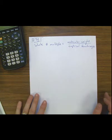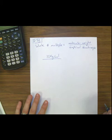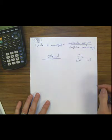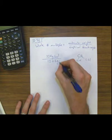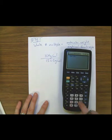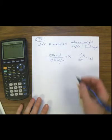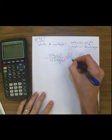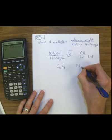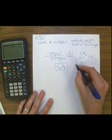The molecular weight is given to us: 104 grams per mole. The empirical formula was CH, so the empirical formula weight is 12.01 plus 1.01, which equals 13.02 grams per mole. Taking 104 divided by 13.02 gives 7.99, which rounds to 8. So the molecular formula is C8H8 — the empirical formula CH multiplied by 8.